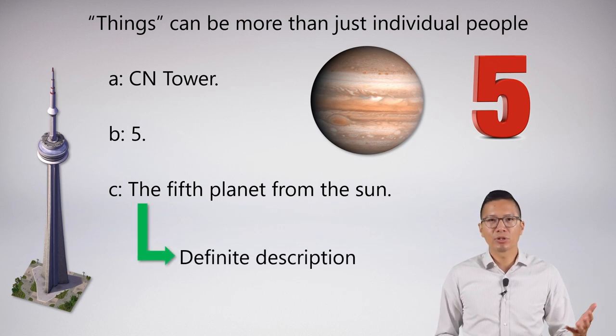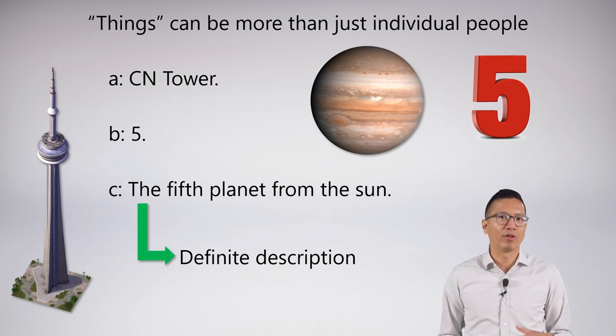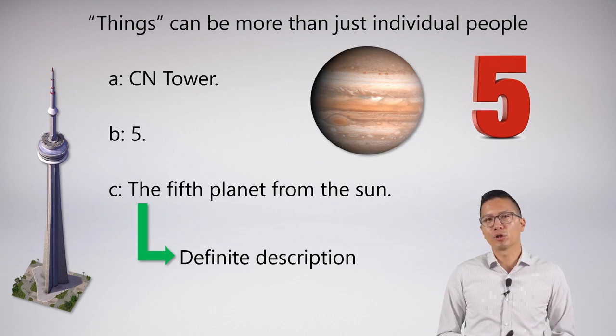Names can be more than just individual people. They can be things in general. Here are some examples: CN Tower, 5, the fifth planet from the sun. I don't think CN Tower is controversial.